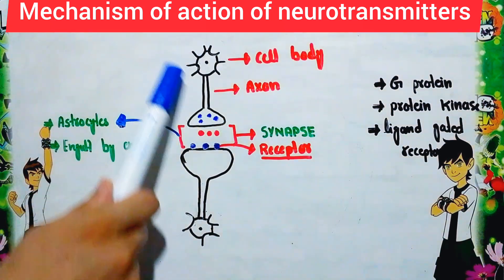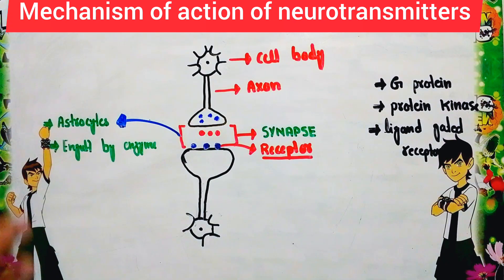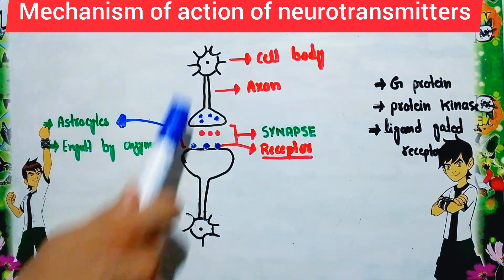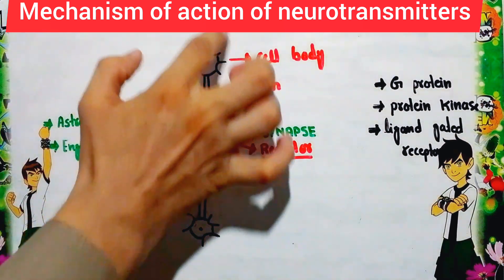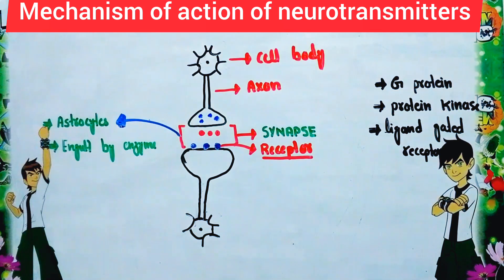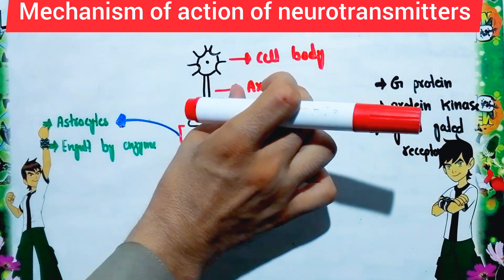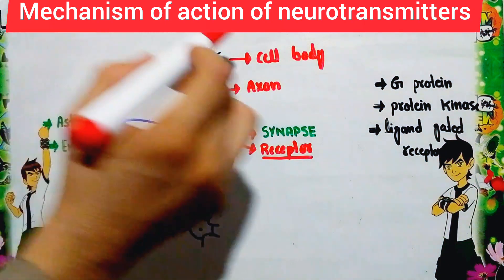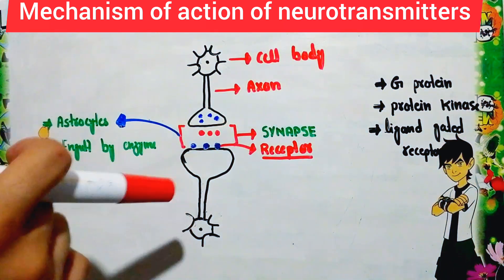Now we will see the mechanism of action of the neurotransmitter — how it transmits nerve impulse from one neuron to another. Starting from synthesis: the cell body is the site of synthesis of the neuron. The neurotransmitter is synthesized in the cell body, and along the axon extends the axon terminal.